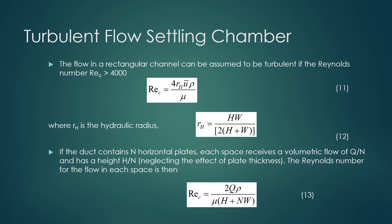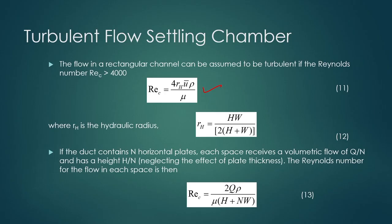Coming to the turbulent flow condition of settling chamber: flow in a rectangular channel like a settling chamber can be assumed to be turbulent if the Reynolds number is greater than 4000. The Reynolds number is based on the chamber's hydraulic radius. Reynolds number is defined as 4*rs*u_bar*rho / mu, where rs is the hydraulic radius, defined as rs = h*w / (2*(h+w)), where h is the height and w is the width of the chamber cross section.